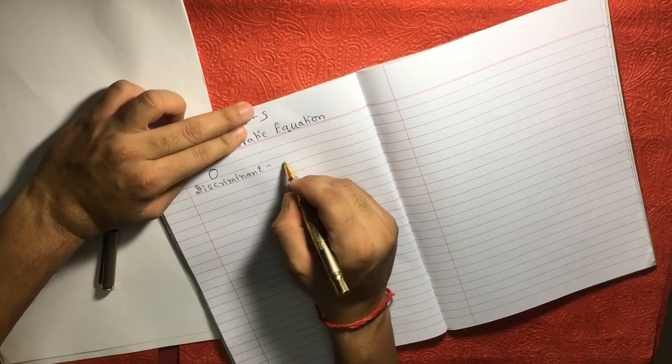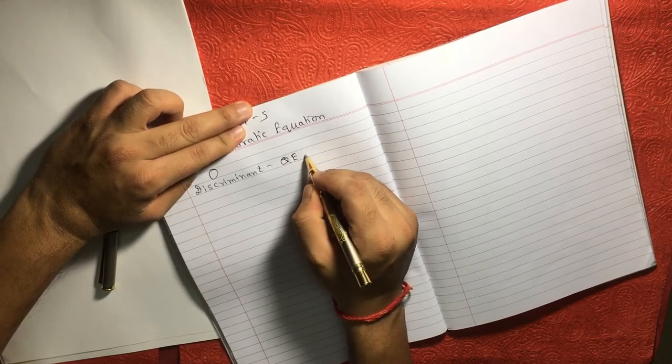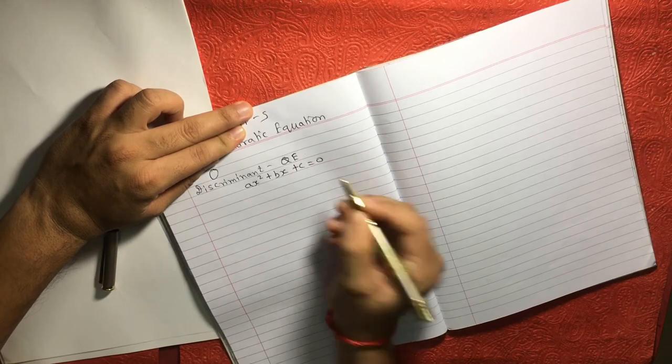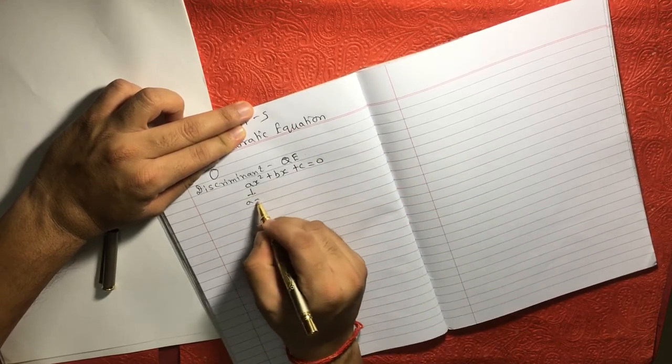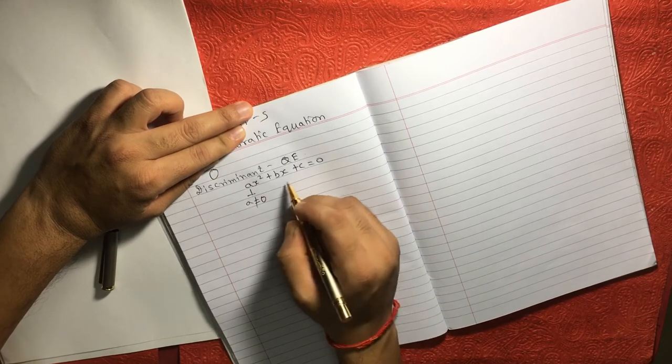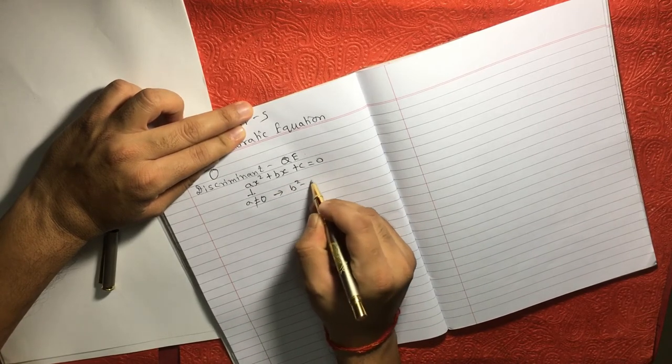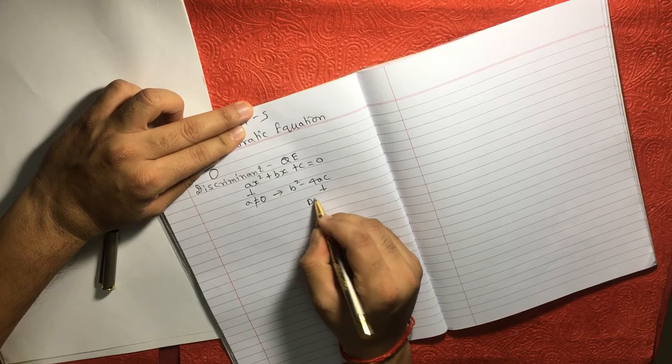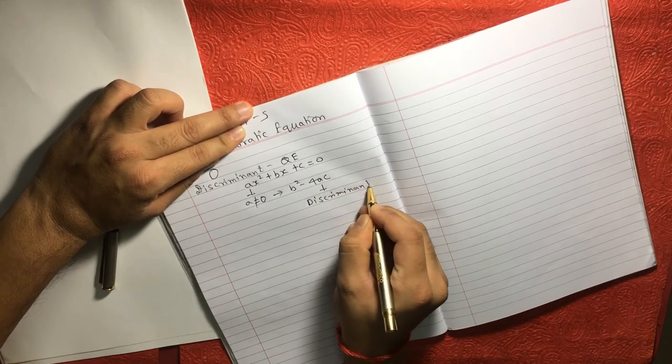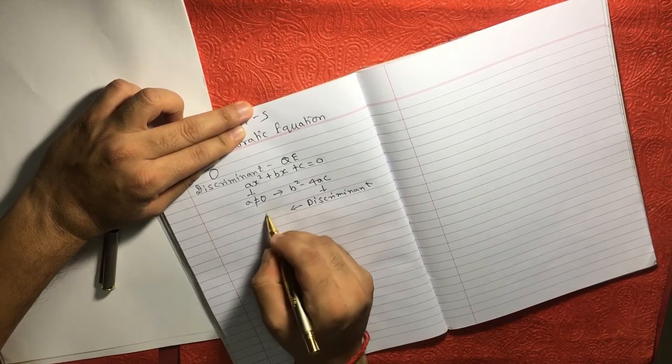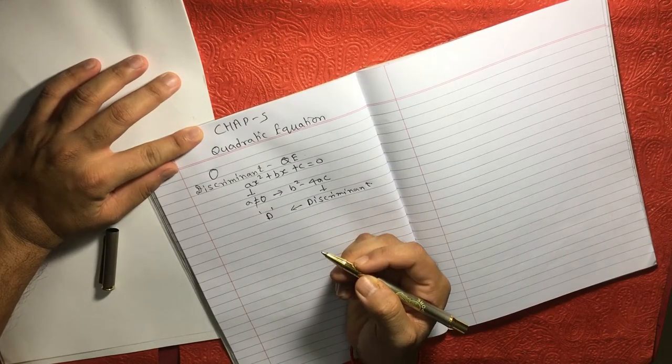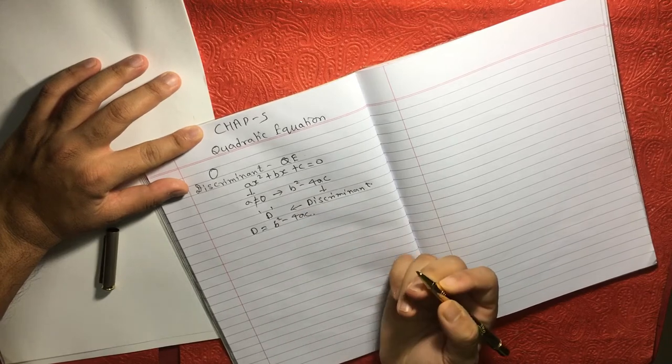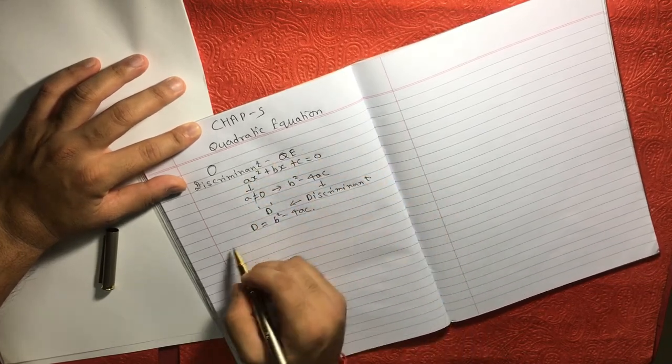What does it mean? For any quadratic equation, I am just writing QE. For example, AX square plus BX plus C is equal to 0, where this A is not equal to 0, then the remaining expression we can say B square minus 4AC and this is called discriminant. And this is generally denoted by D letter.